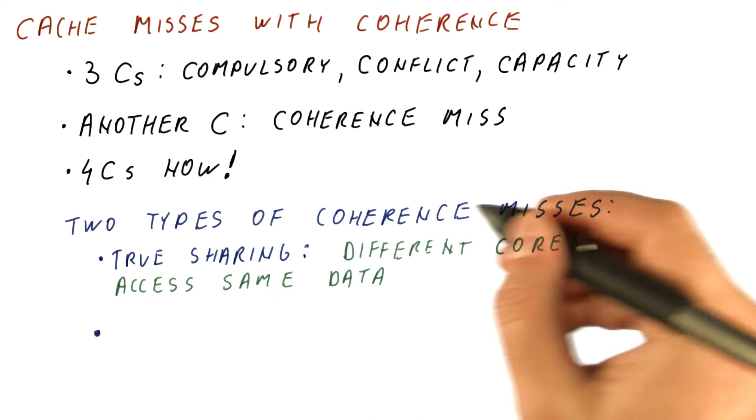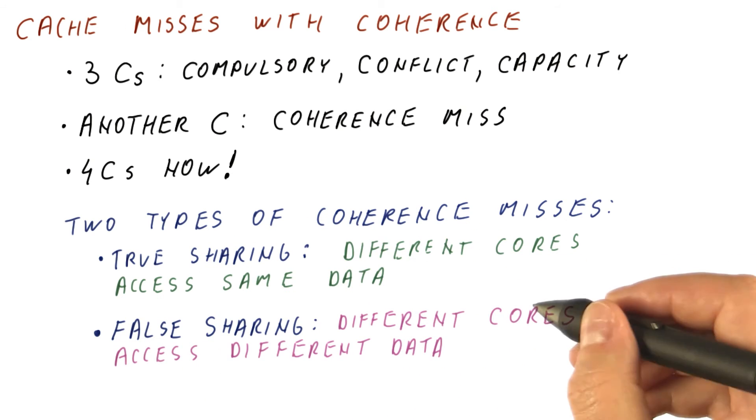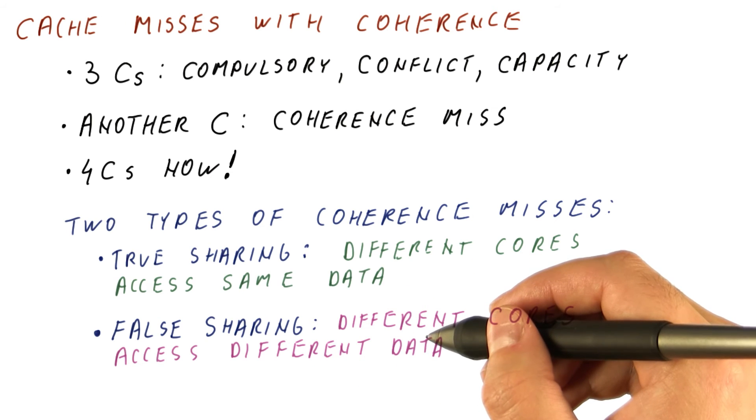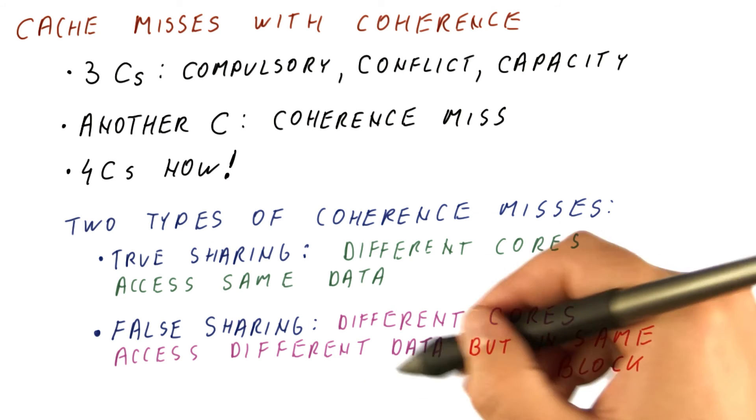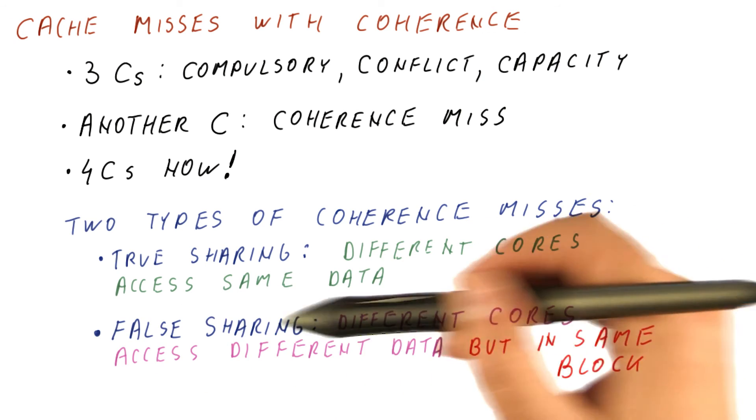There is another type of coherence miss called false sharing, which occurs when different cores access different data. So there shouldn't be any coherence messages because of that, except that these data items are in the same block.